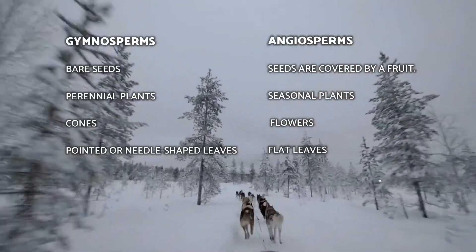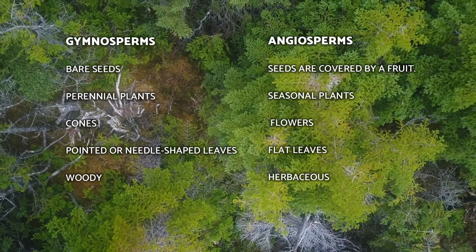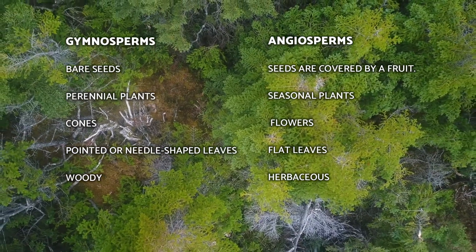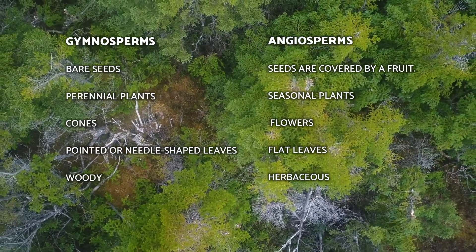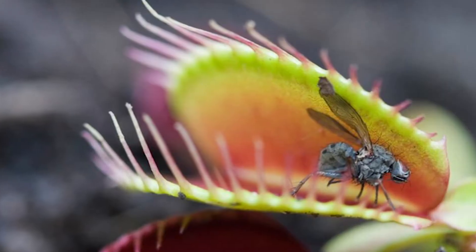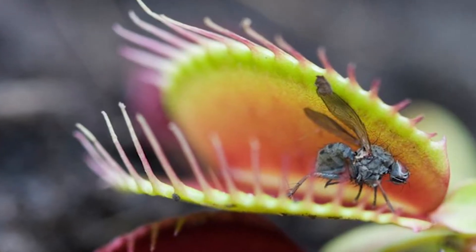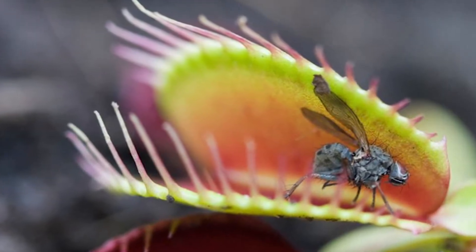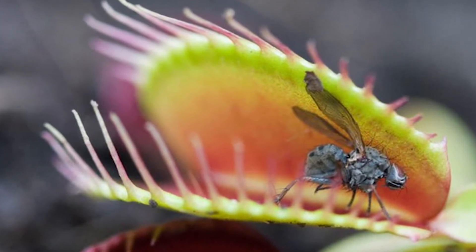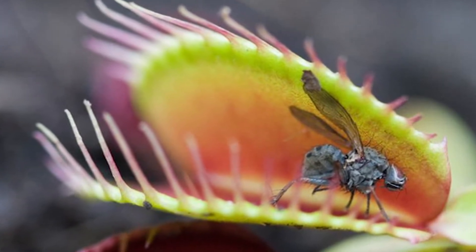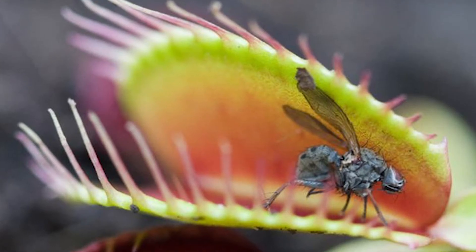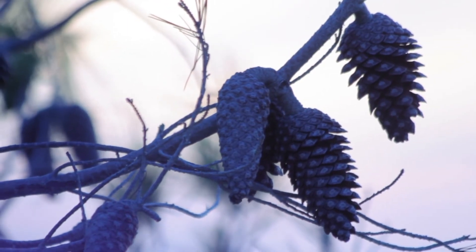In addition, gymnosperm plants are usually woody, while angiosperms are usually herbaceous. Some examples of angiosperm plants are orange trees, sunflowers, lilies, and birch trees. Let us know in the comments below if you would like us to also make a video about angiosperm plants, and we'll see you in the next video!